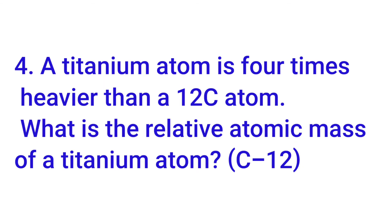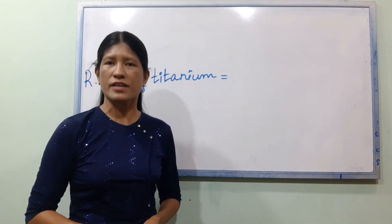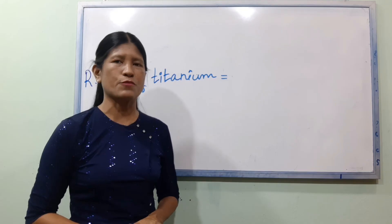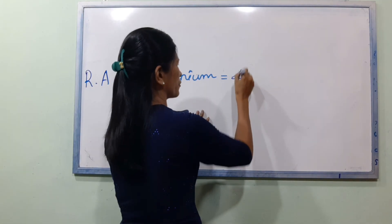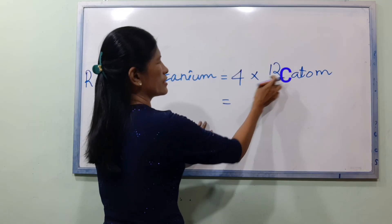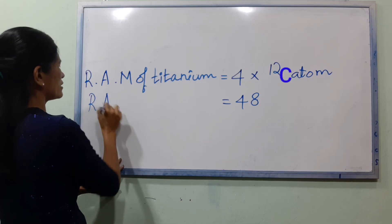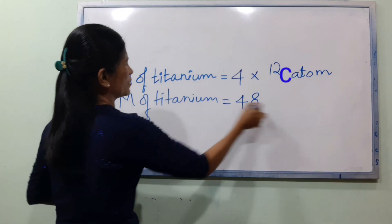Exercise 4: A titanium atom is 4 times heavier than a carbon-12 atom. What is the relative atomic mass of a titanium atom? The relative atomic mass of titanium is equal to 4 times the mass of one carbon-12 atom divided by one-twelfth of the carbon-12 atom. The relative atomic mass of titanium is 48.